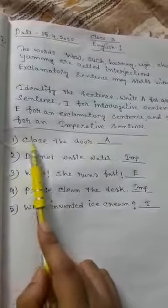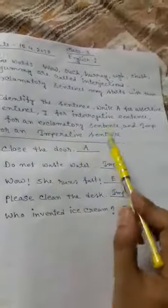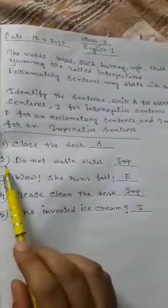Number one: close the door. It's an assertive sentence, so you have to write A. Number two: do not waste water.